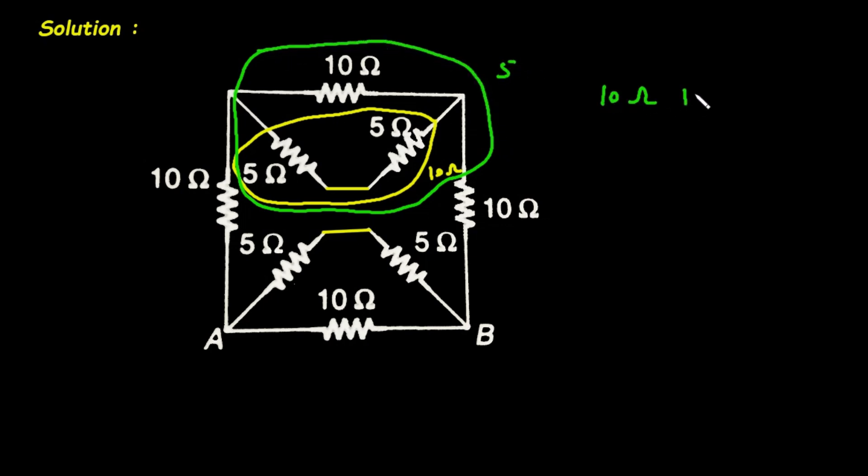Because we know that 10 ohm parallel with 10 ohm, it will be 10 into 10 divided by 10 plus 10. So it will be simply 5 ohm.